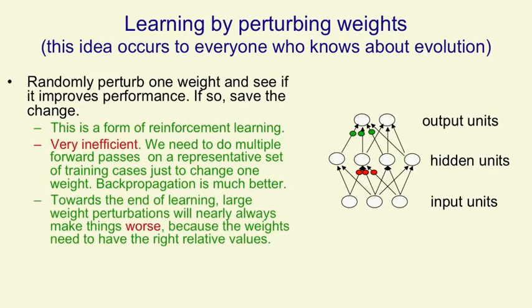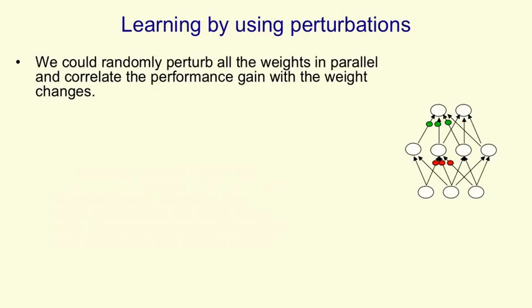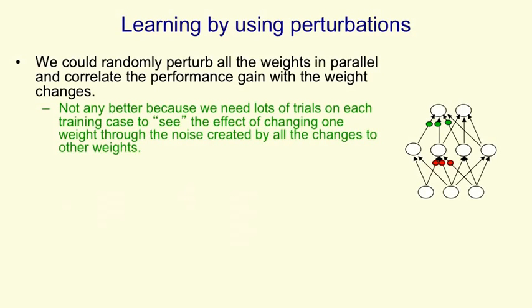An additional problem with randomly changing weights and seeing if it helps is that towards the end of learning, any large change in a weight will nearly always make things worse, because the weights have to have the right relative values to work properly. So towards the end of learning, not only do you have to do a lot of work to decide whether each change helps, but the changes themselves have to be very small. One thing we might try is to perturb all the weights in parallel and correlate the performance gain with the weight changes. That actually doesn't help at all, because we need lots of trials with different random perturbations to see the effect of changing one weight through all the noise created by changing all the other weights.